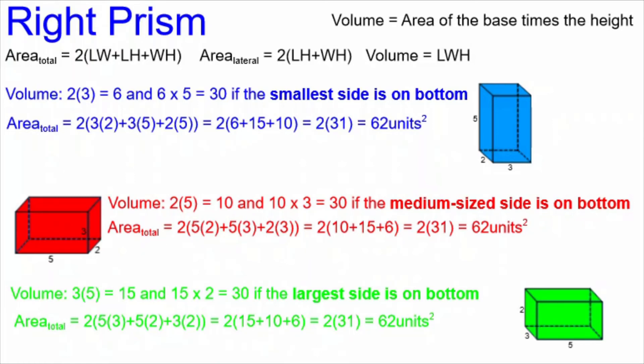What about the lateral area formula though? With the smallest side on the bottom, we end up doing 2 times 25 and getting 50 units squared.